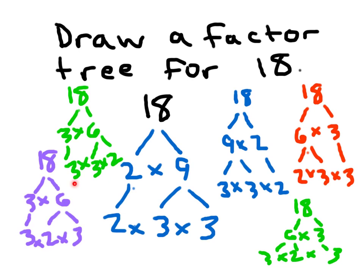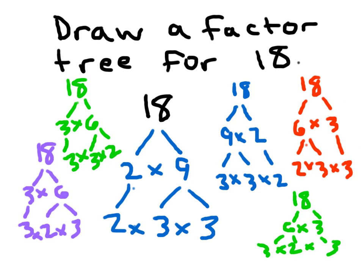If you notice, on the lowest level of each and every single one of those factor trees, we've got exactly those same factors. If we put them in order from least to greatest, we'd have 2 times 3 times 3. The lowest level of your factor tree must not only have prime numbers, but it also evaluates to the number that we are drawing the factor tree for.